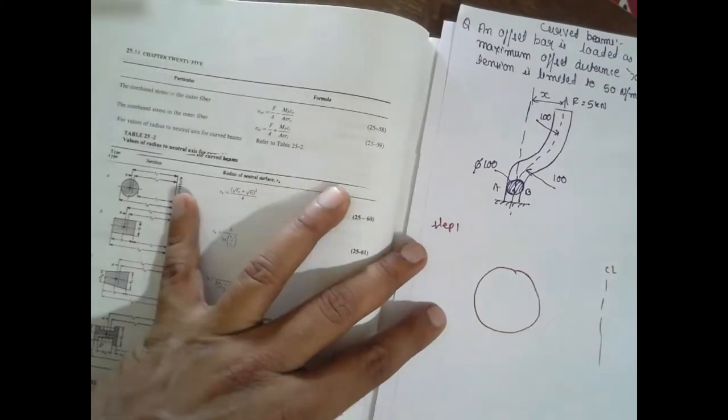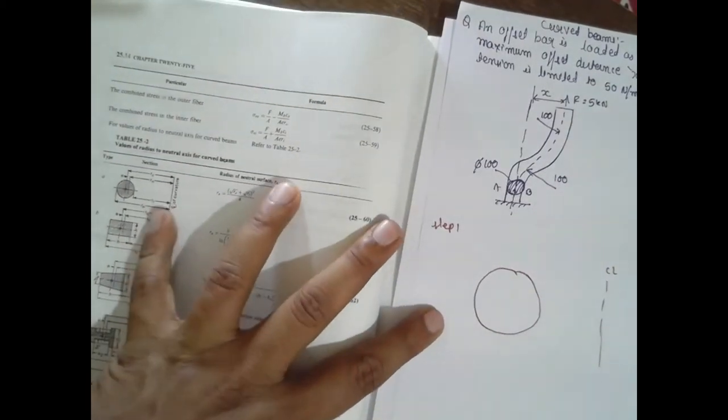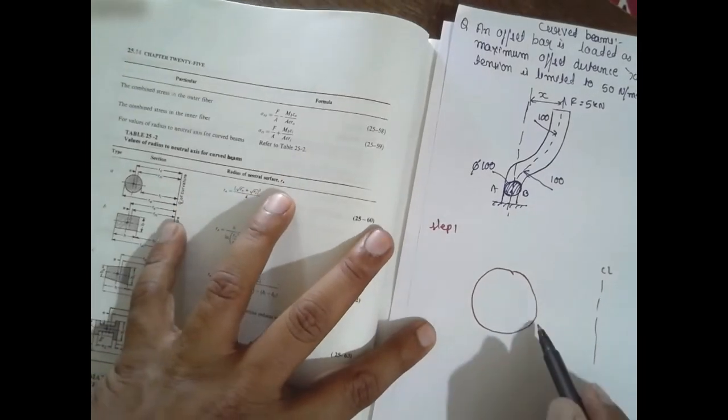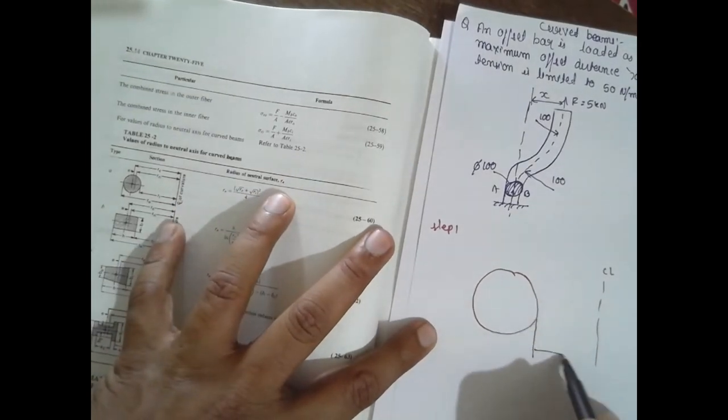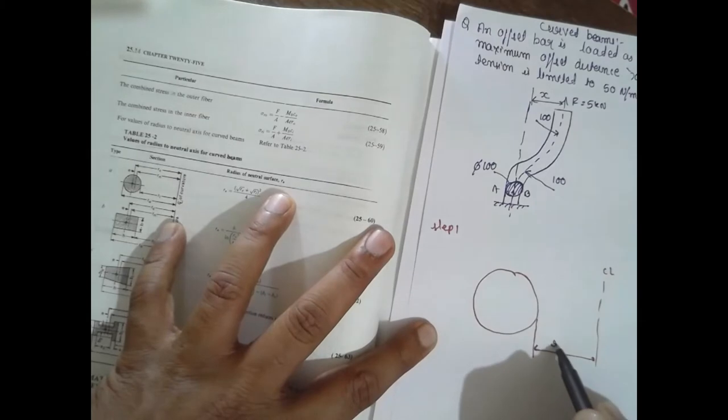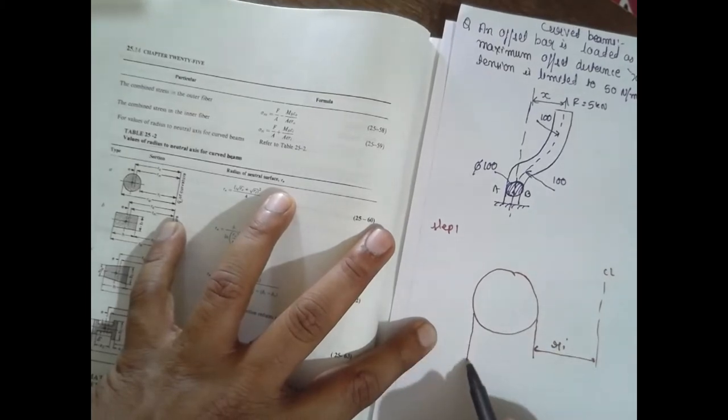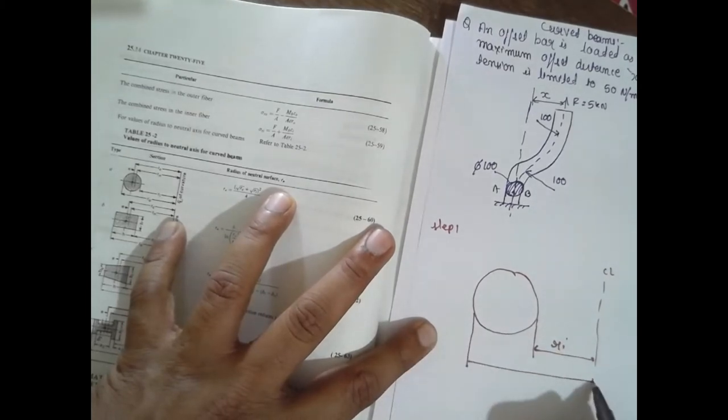Now, I will draw the same profile. This part is given in the data handbook. This part is nothing but ri. This part, this line, r0.